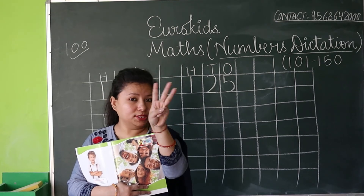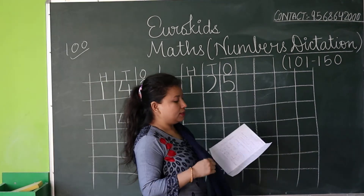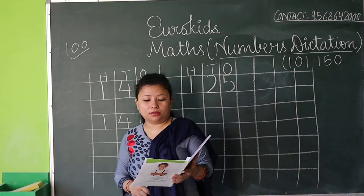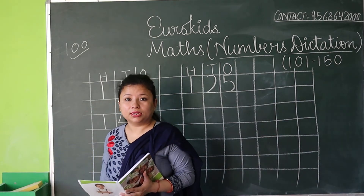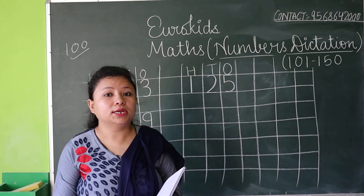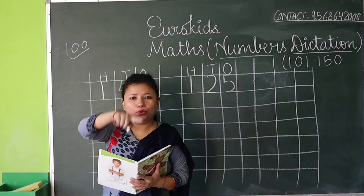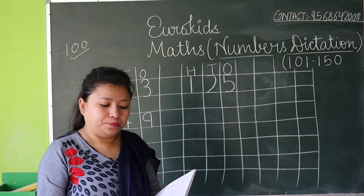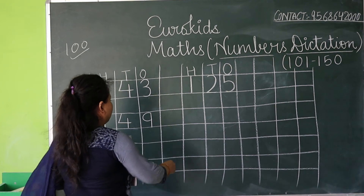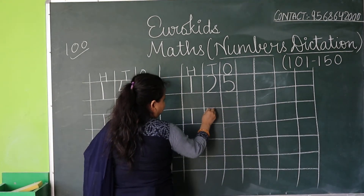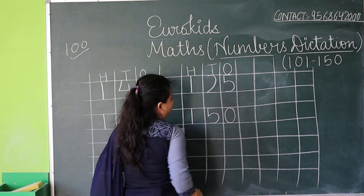Now my next number is 150. 150 — hundred means one, 50 means five, and as you have been taught, there is a 'T' sound in it, which means zero — 150. From 50 you know to write five, and since there is a 'T' sound at the end, write zero — 150.